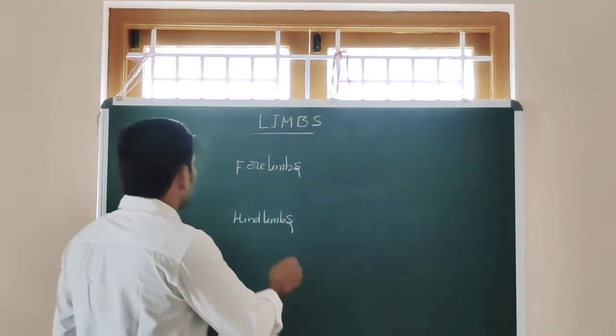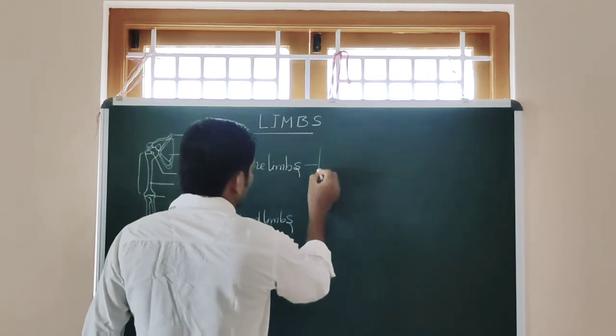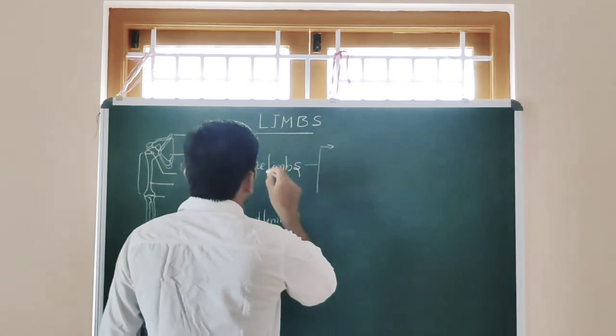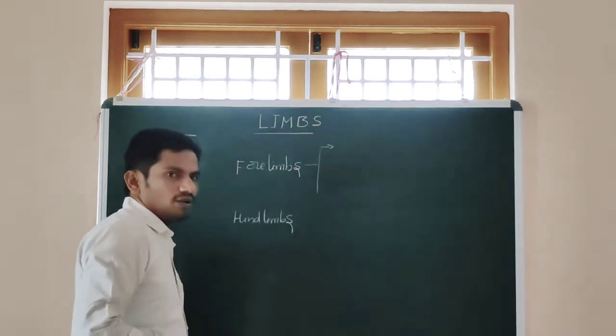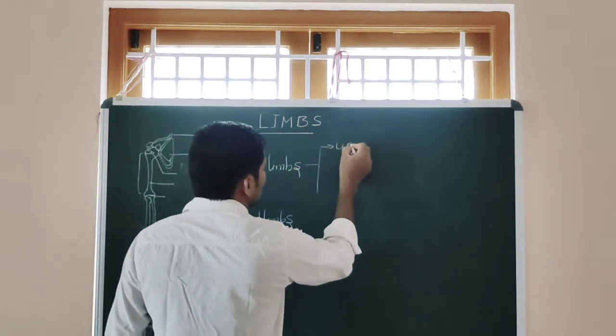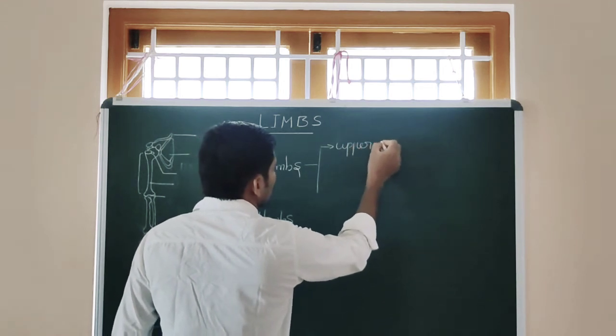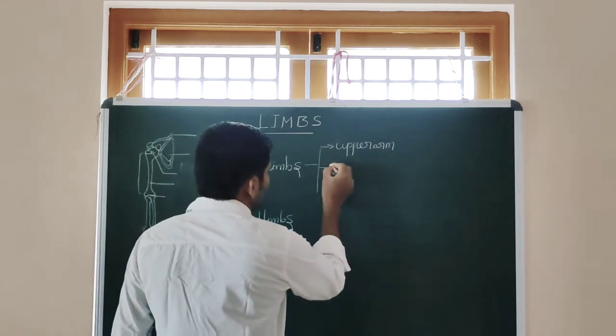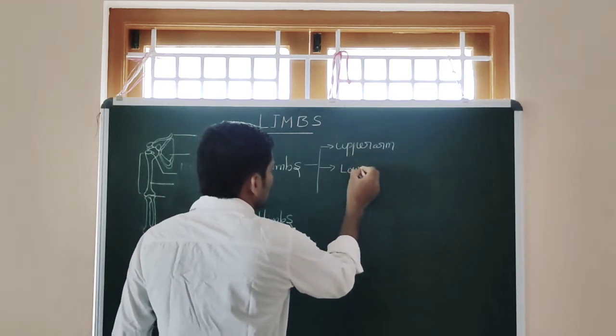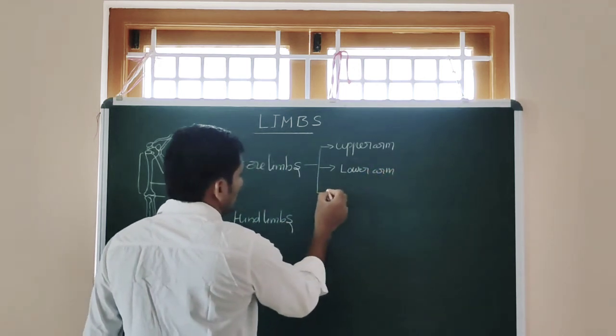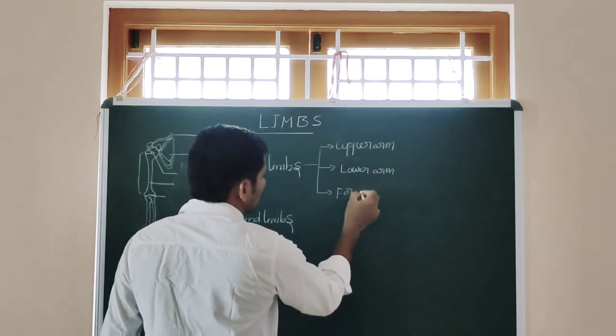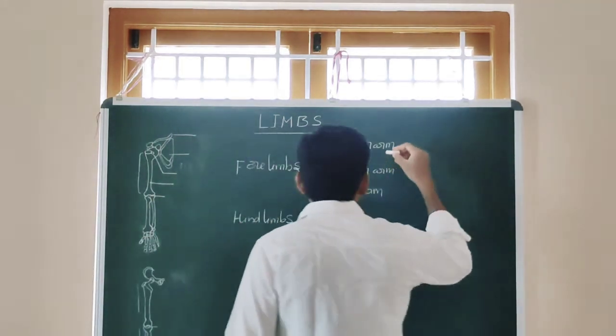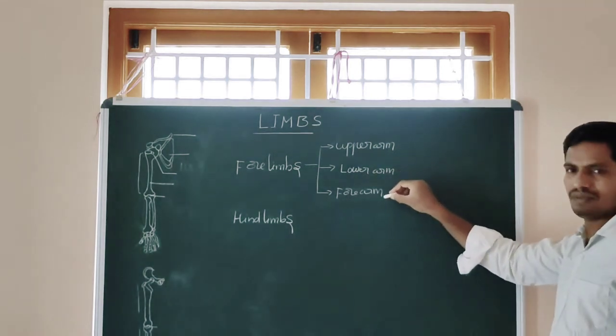Forelimbs consist of three major parts - the hands. These have an upper arm, lower arm, and forearm. So forelimbs have three parts: upper arm, lower arm, and forearm.